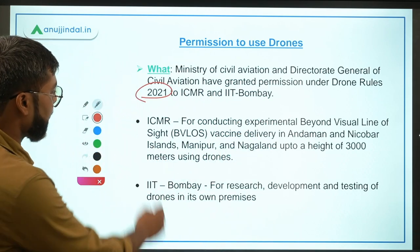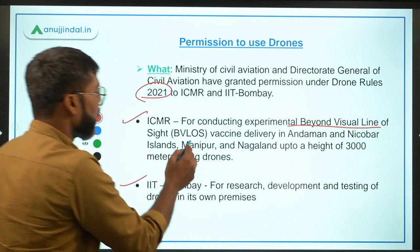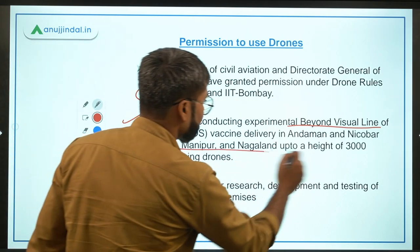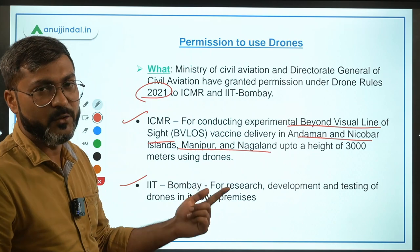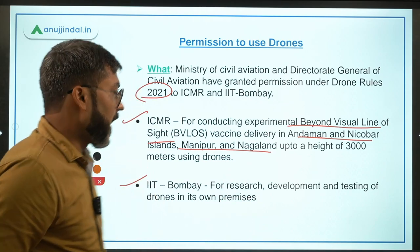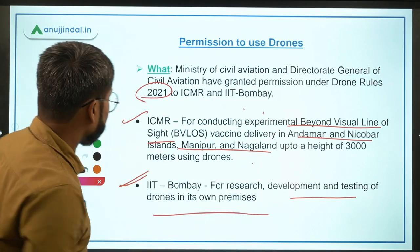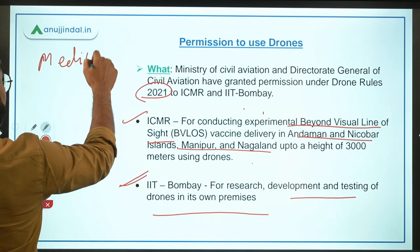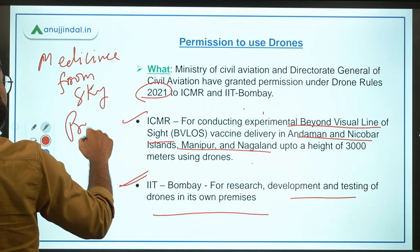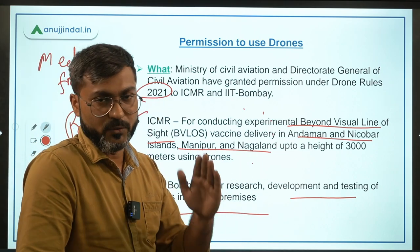These two organizations are ICMR and IIT Bombay. ICMR received permission for conducting experimental beyond visual line of sight vaccine delivery in three states or UTs — Andaman and Nicobar, Nagaland, and Manipur. For IIT Bombay, the objective is research, development, and testing of drones in its own premises. A similar project — the 'Medicine from Sky' project — was launched by the Government of Telangana for delivering medicines and vaccines to primary health centers using drones.